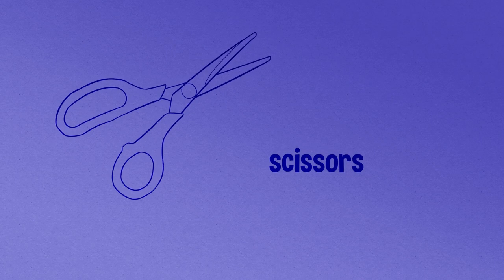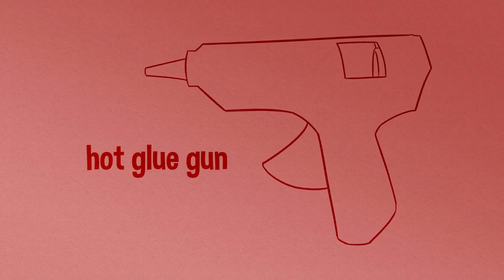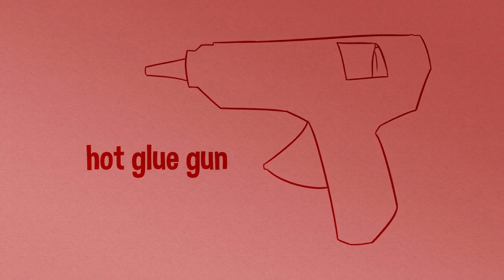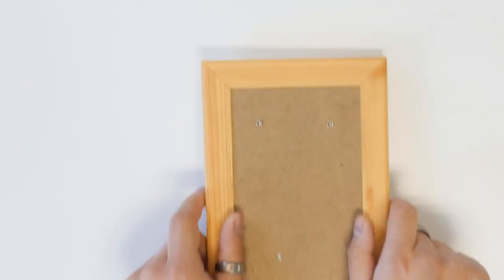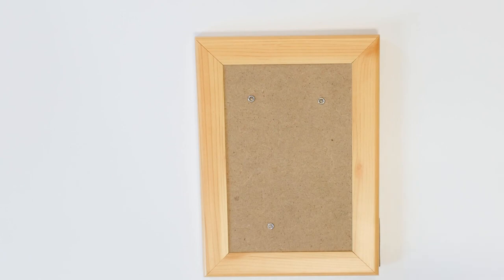a pair of scissors, and a hot glue gun. First, take your picture frame and carefully remove the glass and backing board.